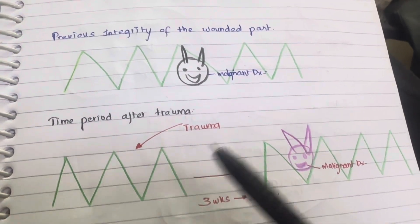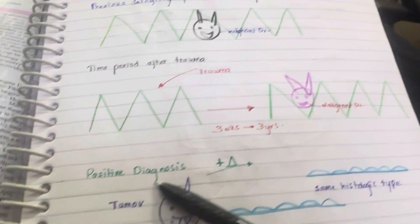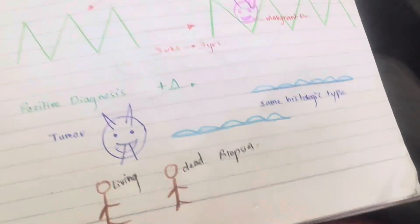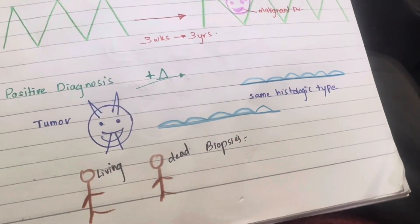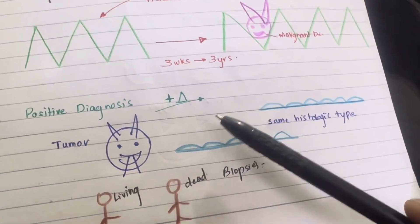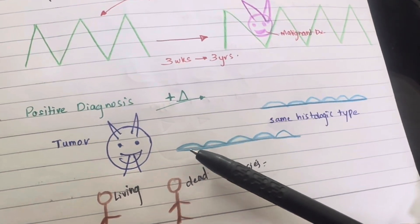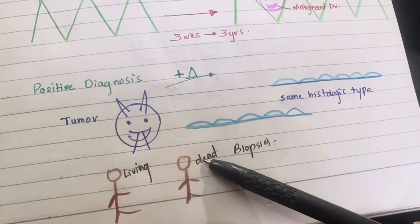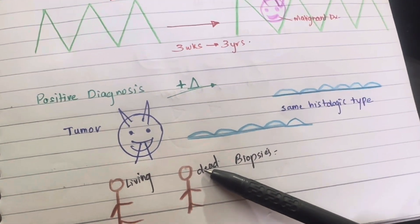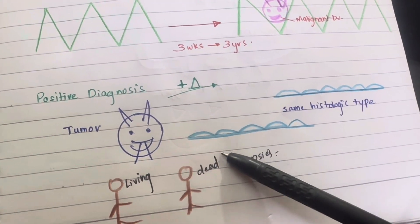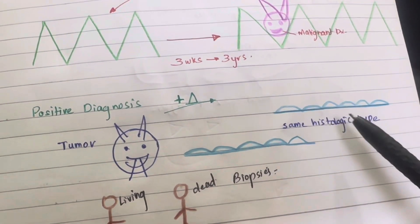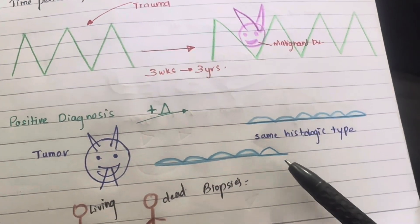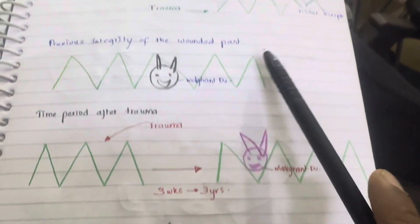The next point is positive diagnosis. There must be a positive pathological diagnosis of the presence and nature of the tumor. Biopsies in the living and autopsies in the dead are mandatory. Furthermore, the tumor must have the same histological type as the cells that were disrupted.